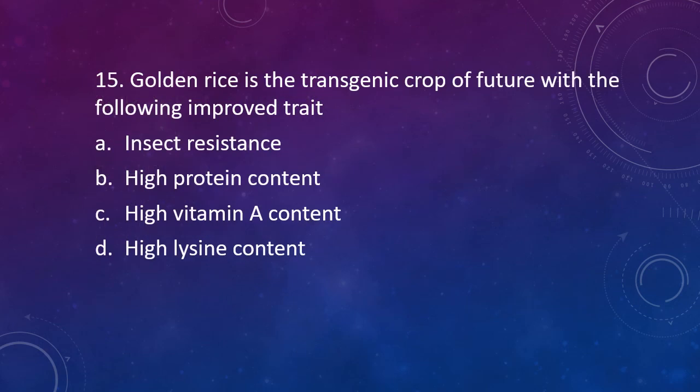Question 15: Golden rice is a transgenic crop of the future. Which of the following traits is improved in golden rice? Option A: Insect resistance. Option B: High protein content. Option C: High vitamin A content. Option D: High lysine content. The correct answer is Option C — high vitamin A content. Because of the presence of carotene, the golden rice appears golden in color, which is how it got its name.